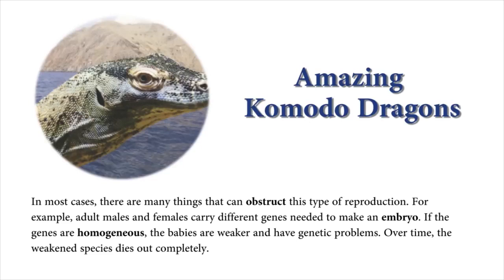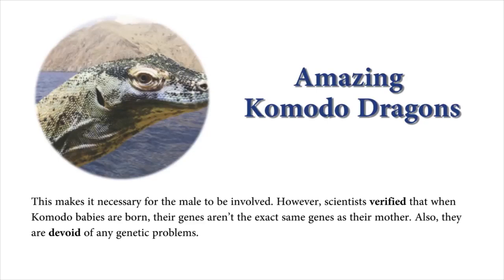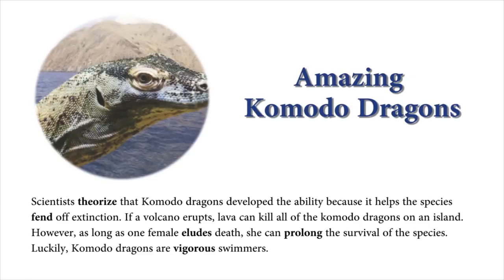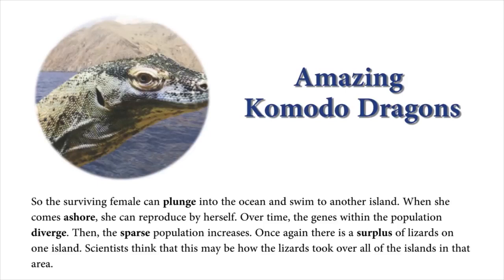Over time, the weakened species dies out completely, making it necessary for the male to be involved. However, scientists verified that when Komodo babies are born, their genes aren't the exact same genes as their mother. Also, they are devoid of any genetic problems. Scientists theorized that Komodo dragons develop this ability because it helps the species fend off extinction. If a volcano erupts, lava can kill all of the Komodo dragons on an island. However, as long as one female eludes death, she can prolong the survival of the species. Luckily, Komodo dragons are vigorous swimmers. So the surviving female can plunge into the ocean and swim to another island. When she comes ashore, she can reproduce by herself. Over time, the genes within the population diverge. Then the sparse population increases. Once again, there is a surplus of lizards on one island. Scientists think that this may be how the lizards took over all of the islands in that area.